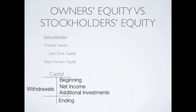Any net income earned by the business would make the owner's capital account go up. Any additional investments that the owner makes would also make the capital account go up, and if the owner made any withdrawals, that would make the capital account go down, leaving us with our ending balance in capital. That's technically what an owner's equity section of a balance sheet would look like — it would have the capital account of the owner.